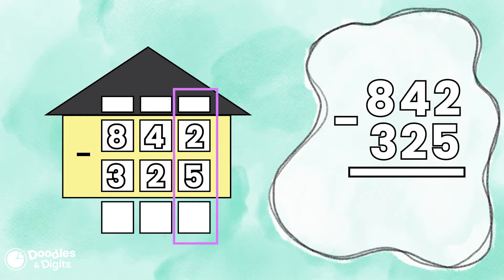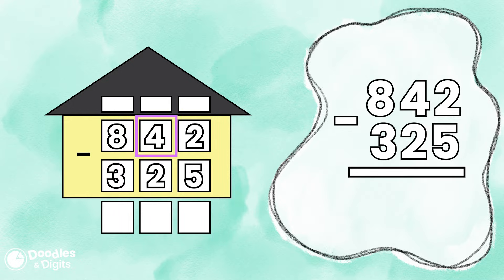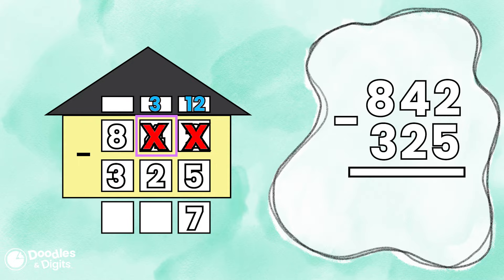Two minus five. Wait a minute — I don't have five to take away from two. So what am I going to do? I actually need to borrow from the tens place. In the tens place is a four, and we're going to borrow one group of ten. So that four will turn into a three. We're going to take that group of ten and add it to the ones place, so instead of two, it's going to be twelve. Twelve minus five — I can do that. Twelve minus five equals seven.